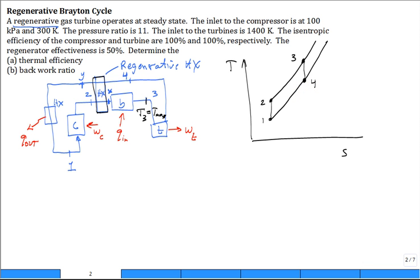Expand down. So what we see is state four is very high temperature. So what we want to do is we want to cool some of the exhaust gases off while heating some of the from state two up to state X. And this is cooled down to state Y.